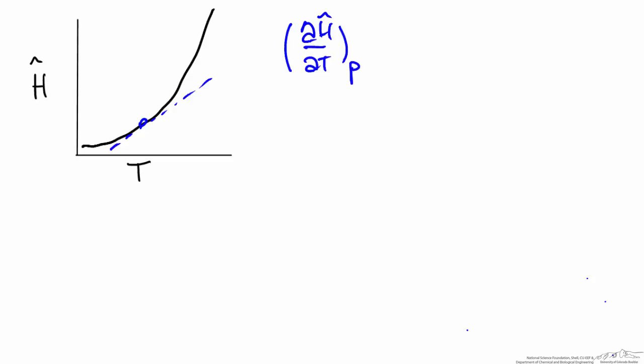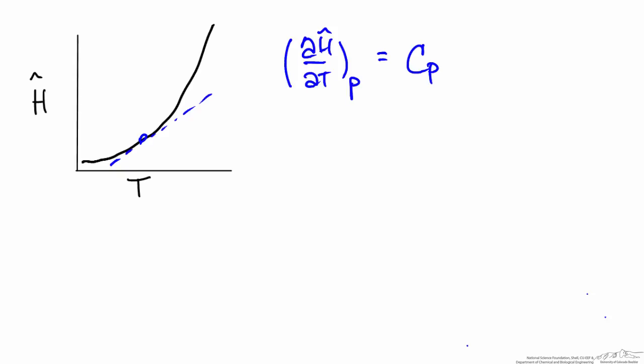This has a physical significance: the change in enthalpy with respect to temperature is the heat capacity. We are noting the heat capacity with a subscript of p to indicate that we are at constant pressure. If we look back at the diagram, as we increase the temperature we can see that we are also increasing the slope of this line, which indicates that the heat capacity is a function of temperature.